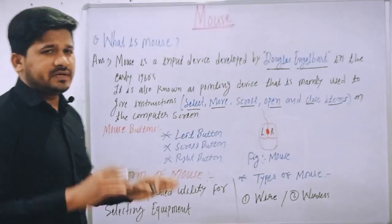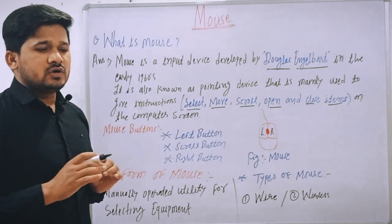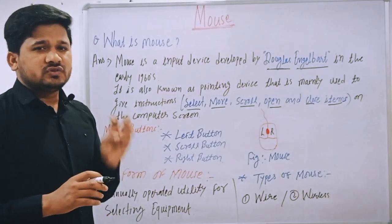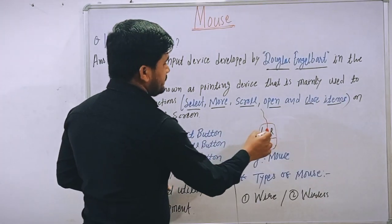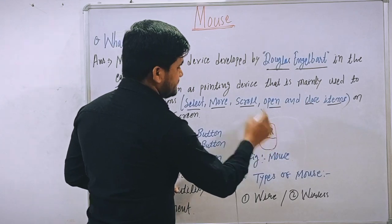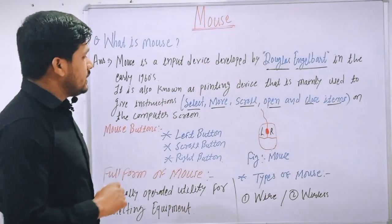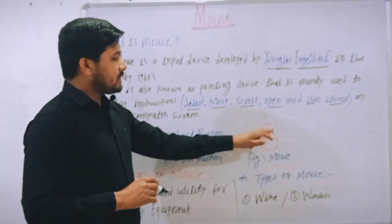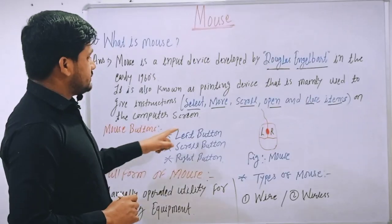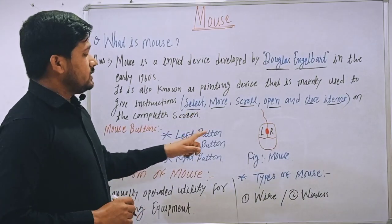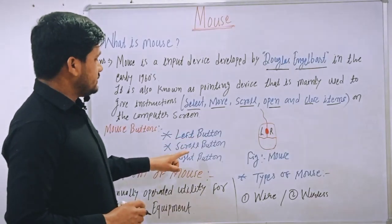Now, mouse buttons. Mouse has three buttons. There are three types of buttons in a mouse: left button, right button, and in the middle there is a scroll button.